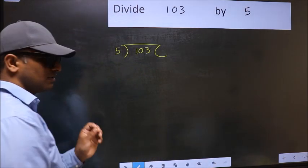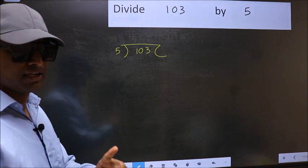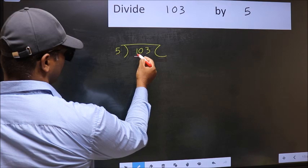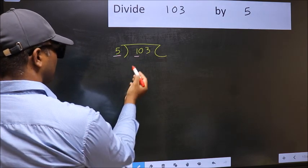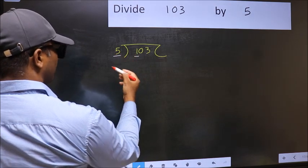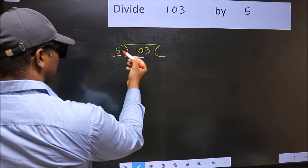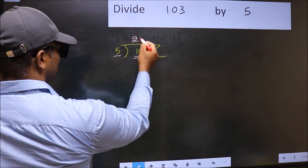This is your step 1. Next, here we have 1 and here 5. 1 is smaller than 5, so we should take two numbers, 10. When do we get 10 in 5 table? 5 times 2 is 10.